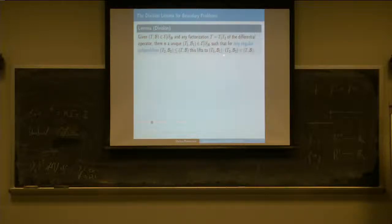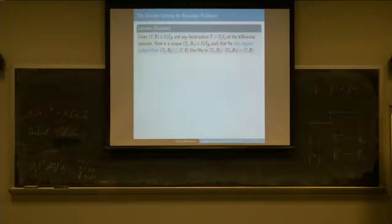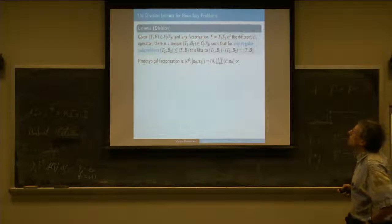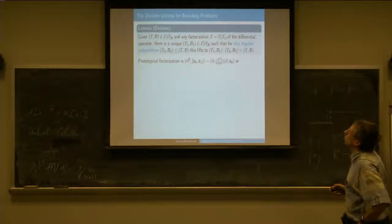Another interesting observation is that if you have such a factorization, as I mentioned yesterday, even though there's a lot of freedom for the right factor, the left factor will always be the unique one—as long as Tb2 is a regular boundary problem, then T1,B1 is a unique left factor.